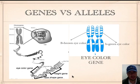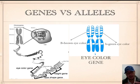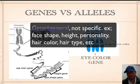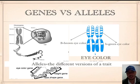Our next term is alleles. Dad has an area for height and mom has an area for height, but they don't just give you height — they give you a specific form of height. Which height instruction do they give you: tall, short, medium? When we talk about specifics, we're talking about alleles. A good way to remember: gene is general. When I say 'height gene,' I'm being general; when I say 'tall or short,' that's specific — those are alleles, the different versions of a gene.